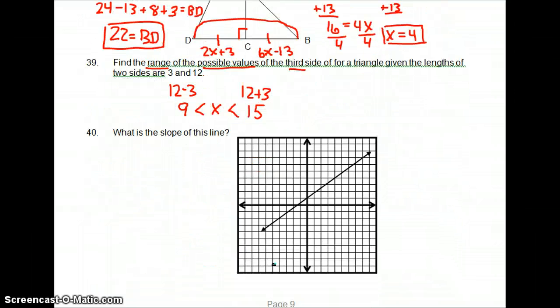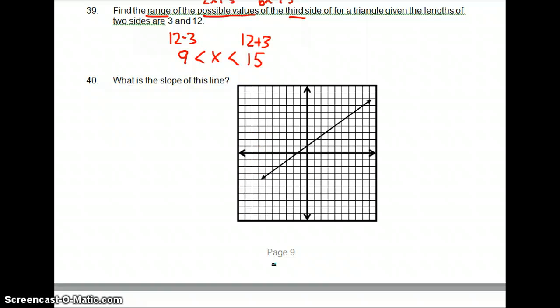40. What is the slope of this line? Okay. To find a slope when you have a graph, just find a place where it crosses an intersection right there. Find another place that crosses an intersection, which is right here. Count the squares. Rise is 1, 2, 3, run 1, 2, 3, 4. So the rise over the run is 3 over 4.